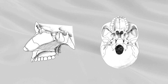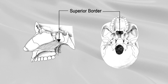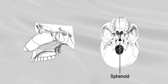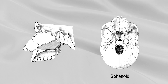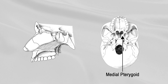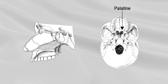VOMER has four borders. The superior border splits into two alae with a groove that is occupied by the rostrum of the sphenoid. The margins of the alae articulate with the vaginal processes of the medial pterygoid plates of the sphenoid behind, and with the sphenoidal processes of the palatine bones in front.